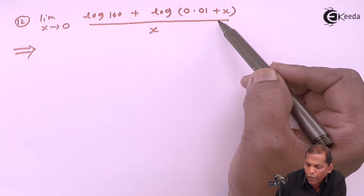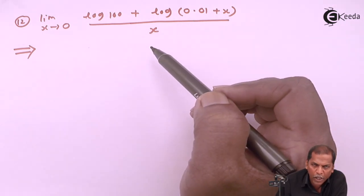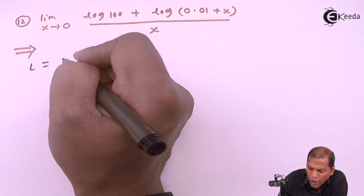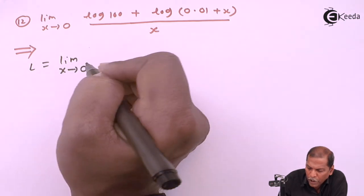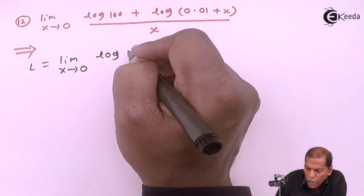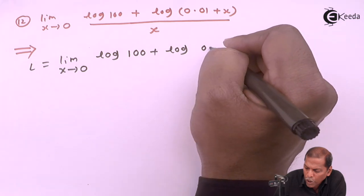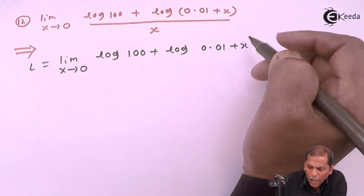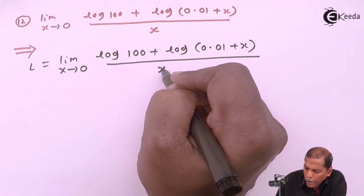Now let's see the solution. First of all, L equals limit as x tends to 0 of [log(100) + log(0.01 + x)] divided by x.